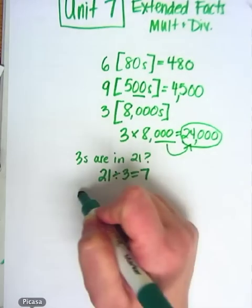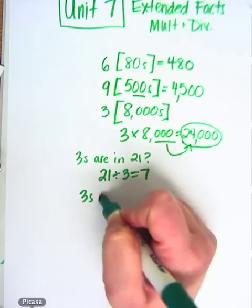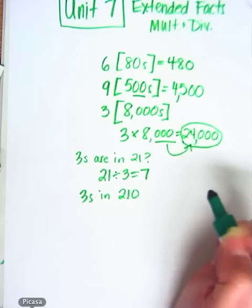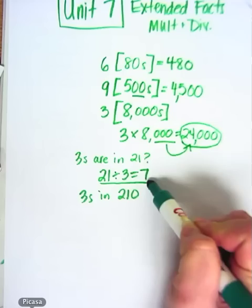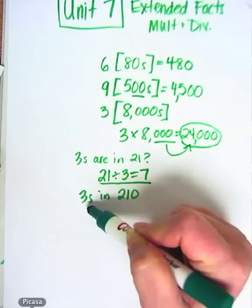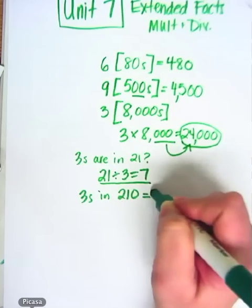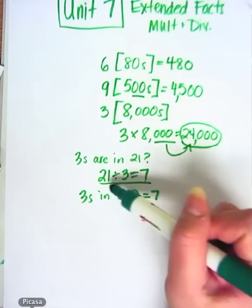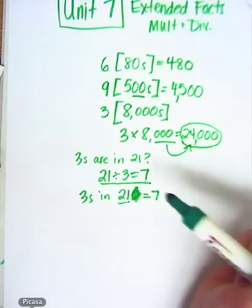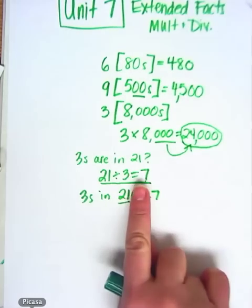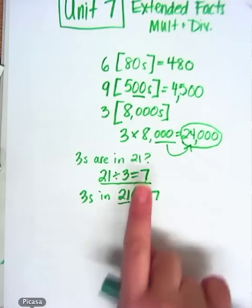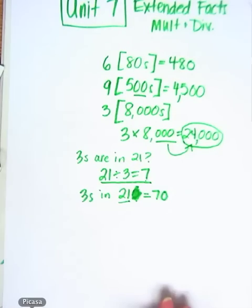Okay. Now, how about threes in two hundred and ten? Well, I know this fact. So I know that there are at least seven threes in twenty-one. But I'm going to cover the zero again, or I just crossed it out. Maybe I shouldn't have crossed it out. I'm going to cover the zero. There are seven threes in twenty-one.